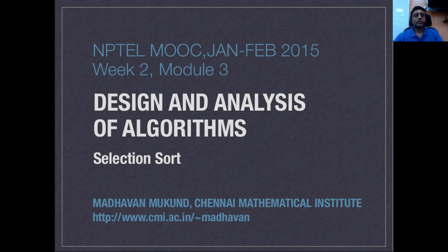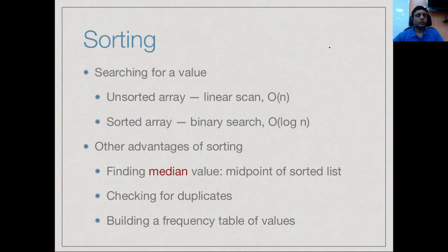Having seen how to search for an element in an array, now let's turn to sorting. The most basic motivation for sorting comes from searching. As we have seen, if you have an unsorted array, you have to search by scanning the entire array from beginning to end, spending linear time. Whereas if you had a sorted array, you can probe it at the midpoint and use binary search to achieve the same result in logarithmic time, which is considerably faster than linear time.